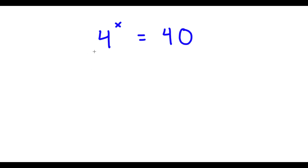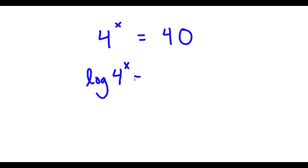In this problem, I have 4 to the power of x is equal to 40. To solve this, I'm going to first start by taking the log on both sides. So now I have log 4 to the power of x is equal to log 40.